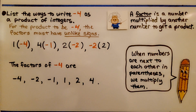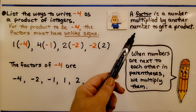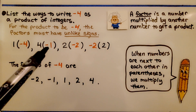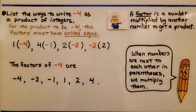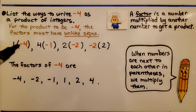Here we need to list the ways to write negative four as a product of integers. For the product to be negative four, the factors must have unlike signs. Remember, a factor is a number multiplied by another number to get a product. So we have one times negative four, or positive four times negative one, or positive two times negative two, or negative two times positive two. The factors of negative four include negative four, negative two, negative one, positive one, positive two, and positive four. Remember, when numbers are next to each other and one or both are in parentheses, it means to multiply.